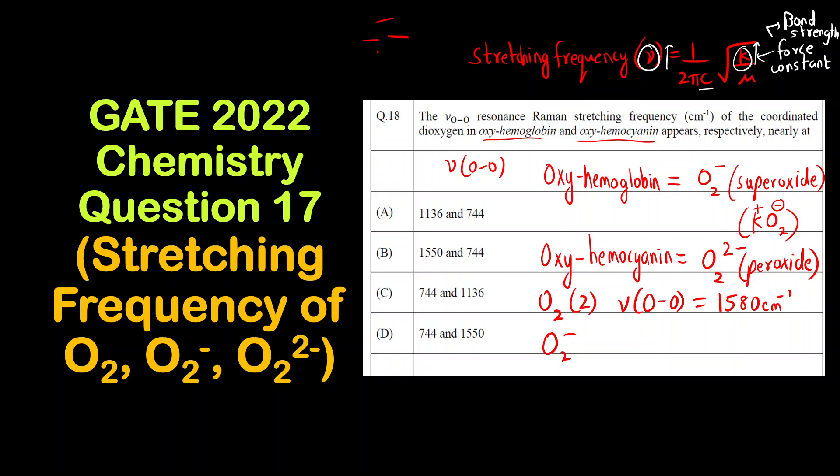Then O2 minus - one electron is added. If I draw the 2p orbital molecular diagram for 2p, there are 8 electrons occupied in 1s and 2s. Total there are 16, so 16 minus 8, we have to fill 8 electrons. This is the molecular orbital diagram for 2p of the oxygen.